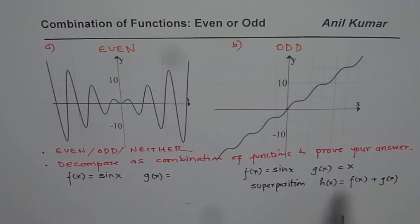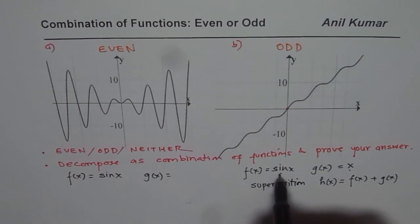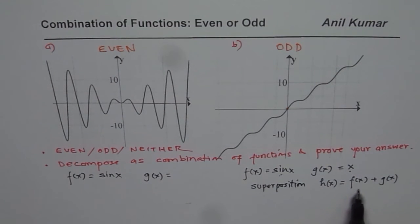Now I can also prove that these are odd functions since I know that sine of x is odd and x is also odd. So when I combine these two odd functions h of x will be odd. You can prove it algebraically. I can leave that for you. So we have done one part.